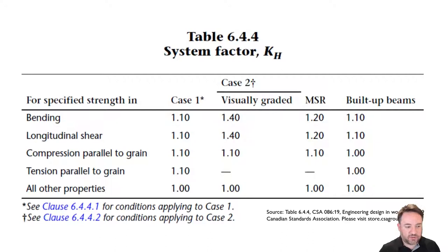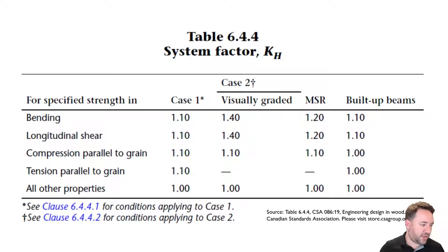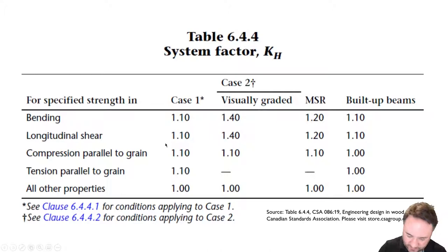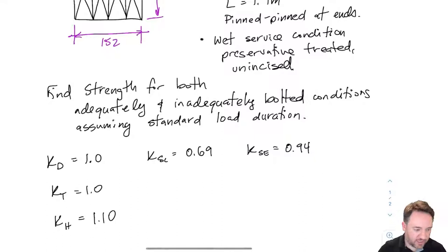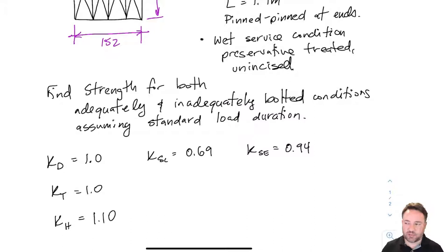Whether we consider this to be a built-up section or four individual pieces mutually supporting the load, both cases qualify for system effect factor case one. For kh, case one compression parallel to grain gives 1.10. Case two applies to systems of joists or wall systems held together with sheathing with certain nail requirements, which doesn't apply here. So kh equals 1.10.